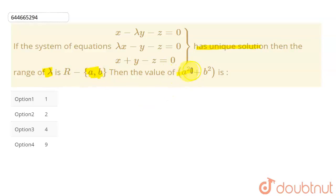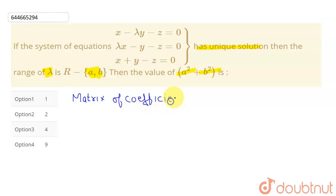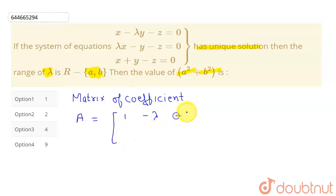We have to find the value of a² + b². For that, let me first find the matrix of coefficients. If I write the matrix of coefficients and denote it as A, that will be equal to: first row [1, -λ, -1], second row [-1, 1, 1], third row [1, -1, -1].